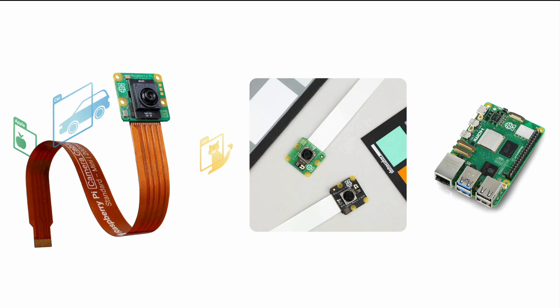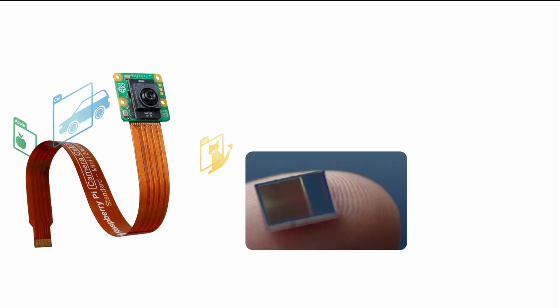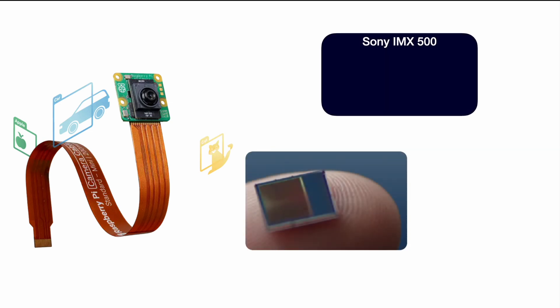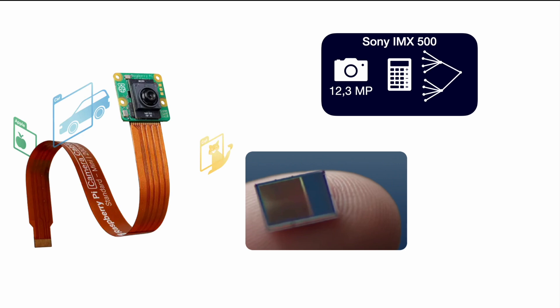That's exactly what's different with the Raspberry Pi AI camera. To achieve this, they're using the Sony IMX500 chip, which you can see here in the picture. It is the actual sensor, providing 12.3 megapixels of resolution, and it also provides all the computing power on the chip itself. All the neural nets used to process pictures are running right on the same chip where the camera sensor is located — the IMX500.